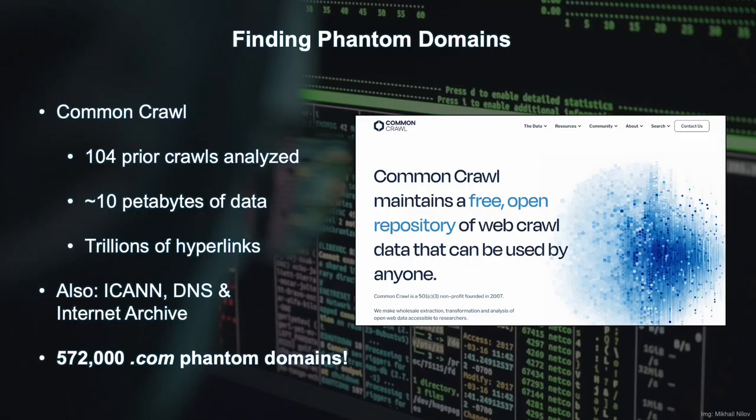We began our work by processing the largest web crawl dataset available to researchers, the Common Crawl. This was a substantial task involving the processing of 104 prior crawls amounting to around 10 petabytes of data and including trillions of hyperlinks. This, coupled with some other datasets, led us to find over 572,000 .com phantom domains.